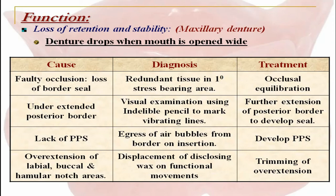If lack of posterior palatal seal is present, the diagnosis could be done with the presence of air bubbles from the borders on insertion, and the treatment is to develop a proper posterior palatal seal. If overextension of labial, buccal, and hamular notch areas is present, the diagnosis is displacement of disclosing wax on functional movements, and the treatment is trimming of the overextensions.